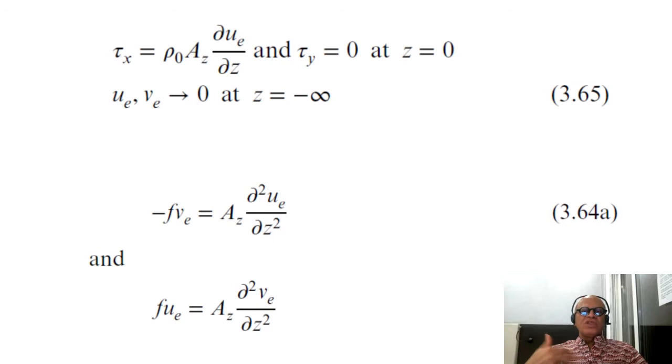They are very rapid responses to wind. There is a quick equilibrium between wind forcing and the ocean currents, Ekman currents. So τₓ in this case is ρ₀ A_z du_e/dz and τᵧ.